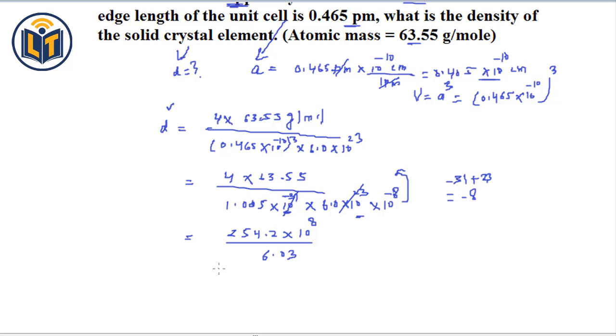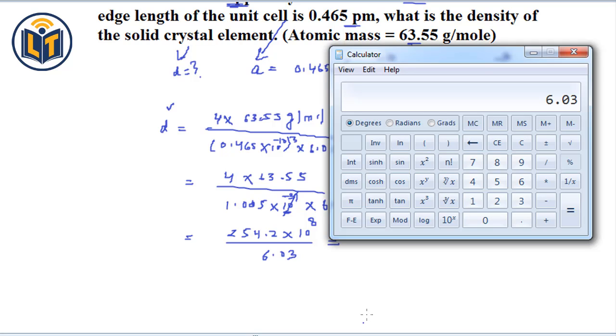Now, we can divide these values. Here, we have 254.2, divided by 6.03. The value which we get that is 42. And here, we can write this value in three significant figures. You can see that the edge length of the unit cell is given in three significant figures. So, as a result here, we get 42.2.